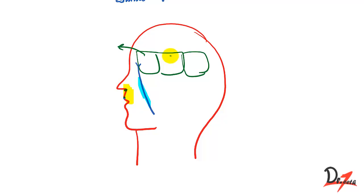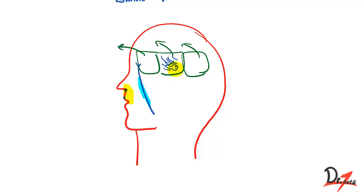If I divide the skull into three parts, we have the anterior cranial fossa, the middle cranial fossa, and the posterior cranial fossa. In the middle cranial fossa, we have a channel of veins — like pipelines — and that is called the cavernous sinus.